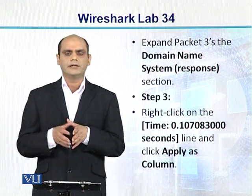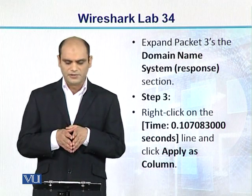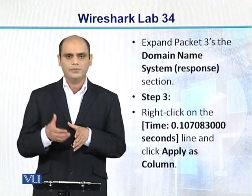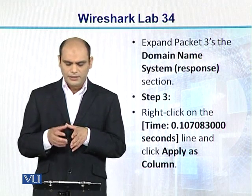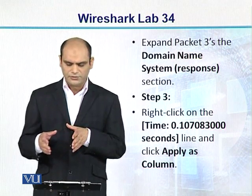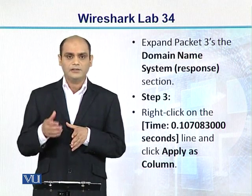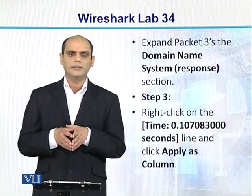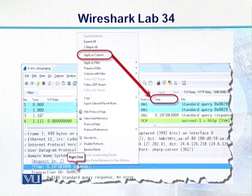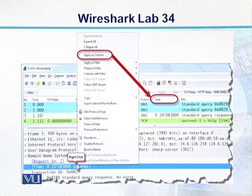Hum kya karte hain? Packet no. 3 ko expand karte hain. Uska jo Domain Name System ka response section hai, aap use expand karein. Right click on time — time: 0.107083000 seconds. Is line ko aap right click karein aur apply kar dein as a column. Toh is diagram mein humne packet no. 3 ka Domain Name System section expand kiya, response section pe gaye, right click kiya, aur apply as a column kar diya. Toh hamara time nazar aana shuru ho gaya hai.